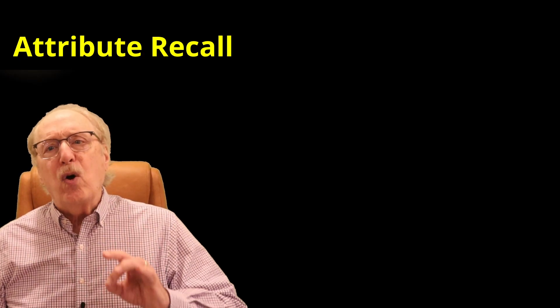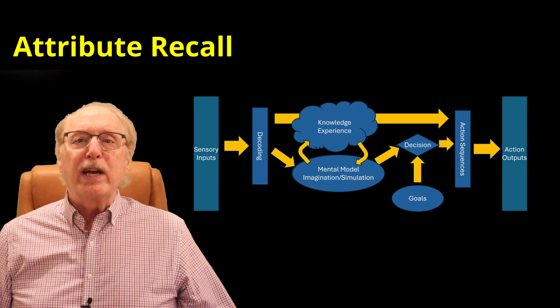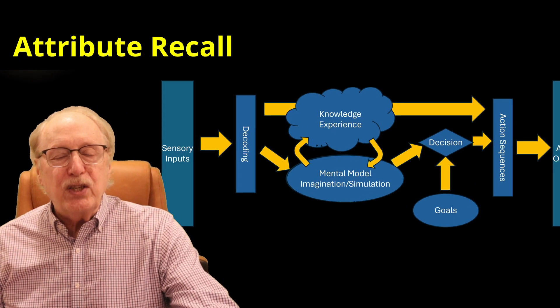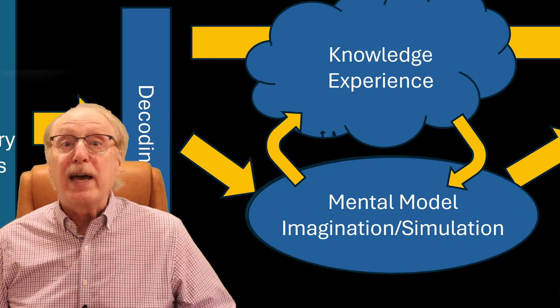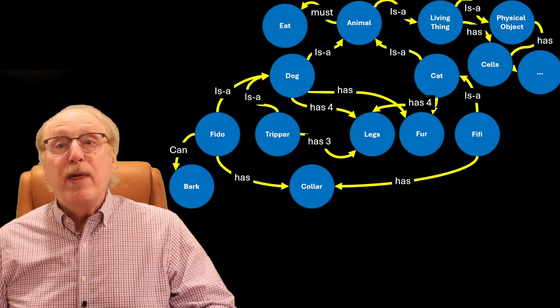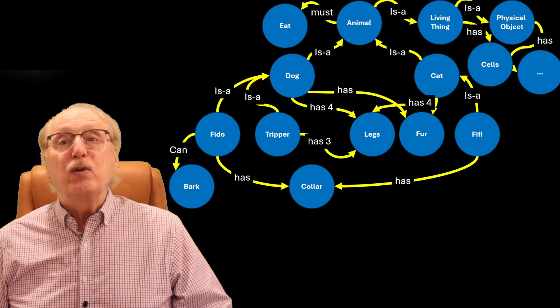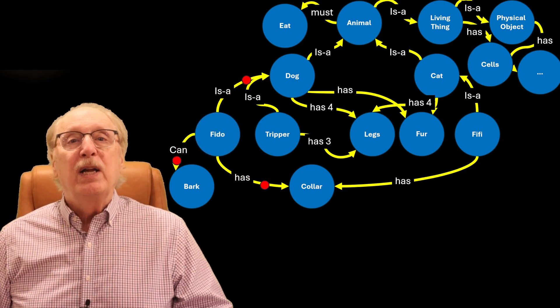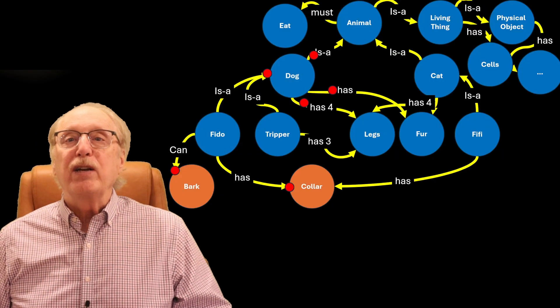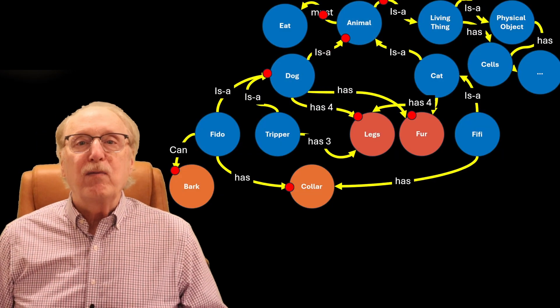Recognition, though, is only the beginning. When you recognize Fido, your brain estimates his position relative to yourself, so you can add him to your local mental model, and we'll cover that in a future video. Then your brain immediately launches a new search. Attribute recall to get the attributes of Fido which you can't sense directly right now.